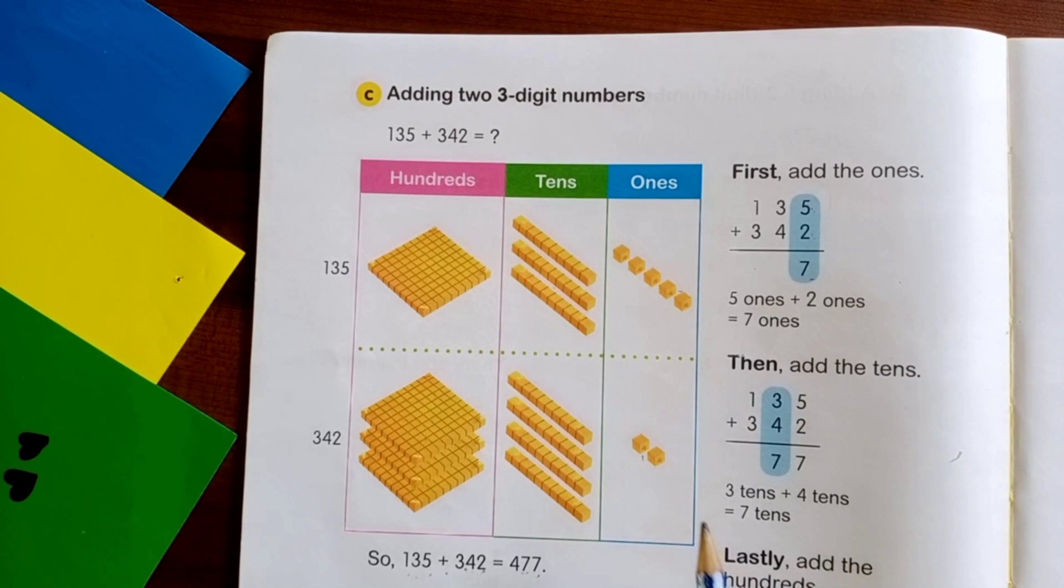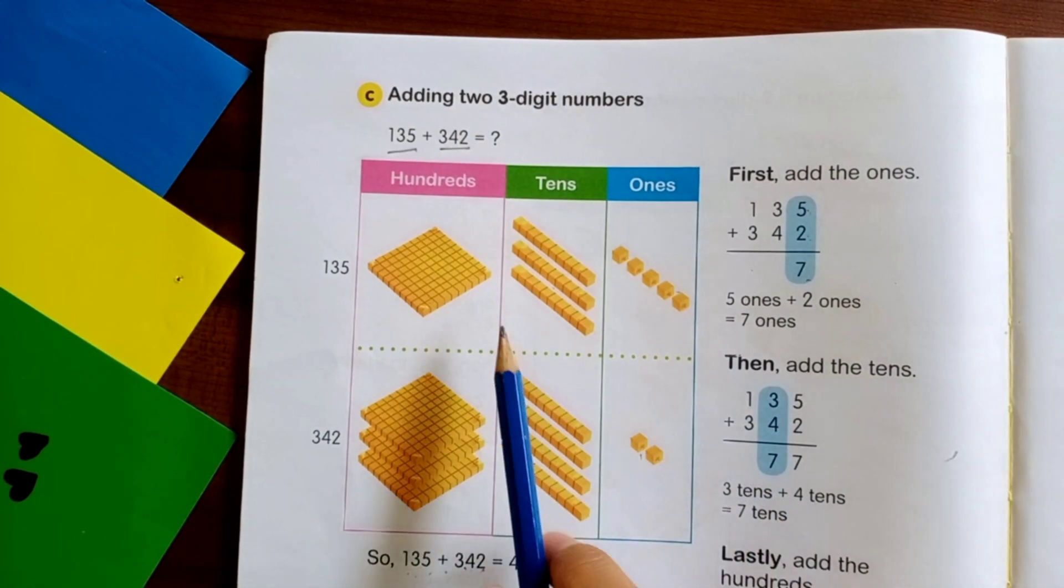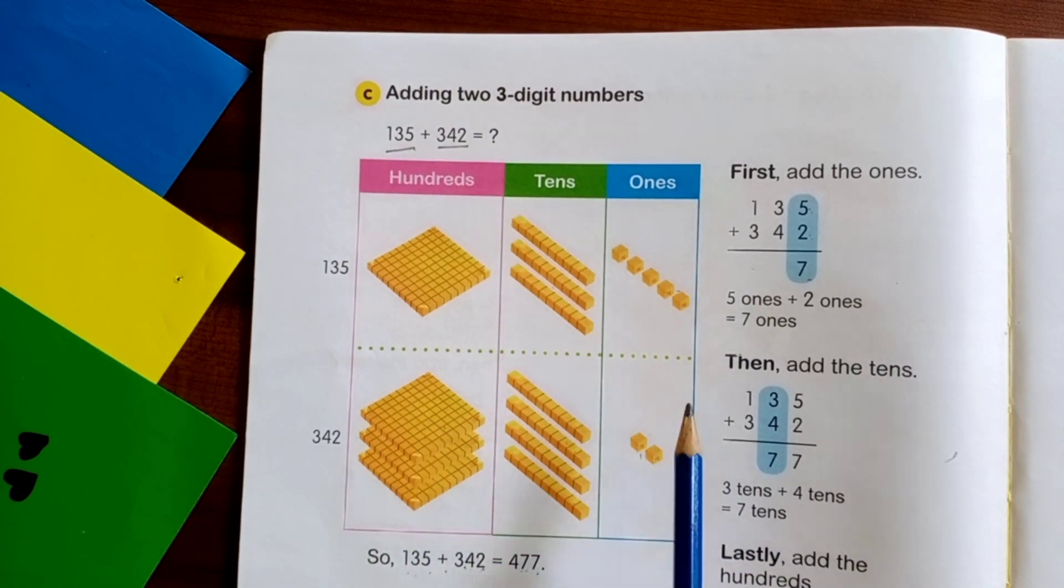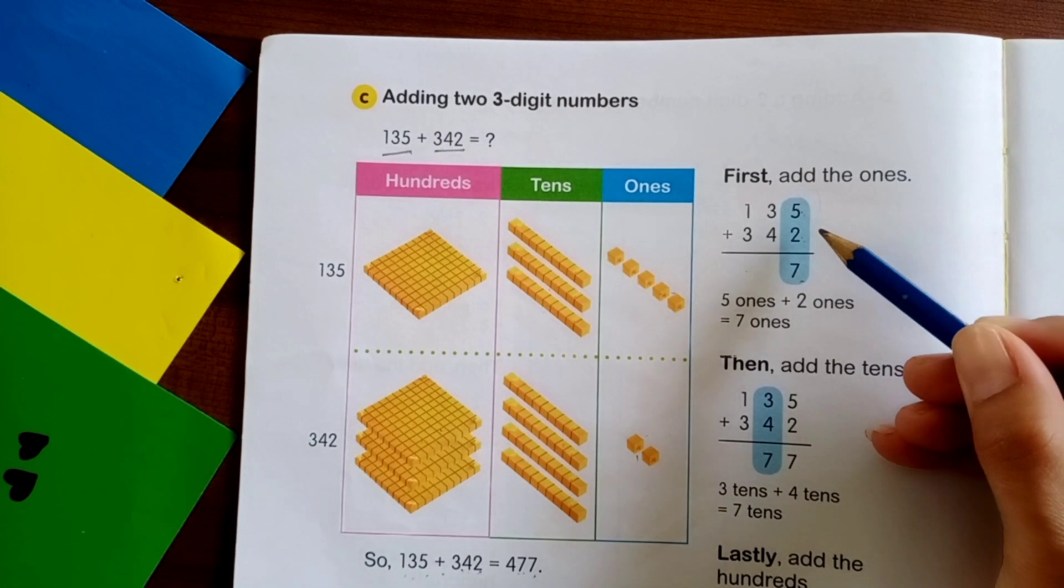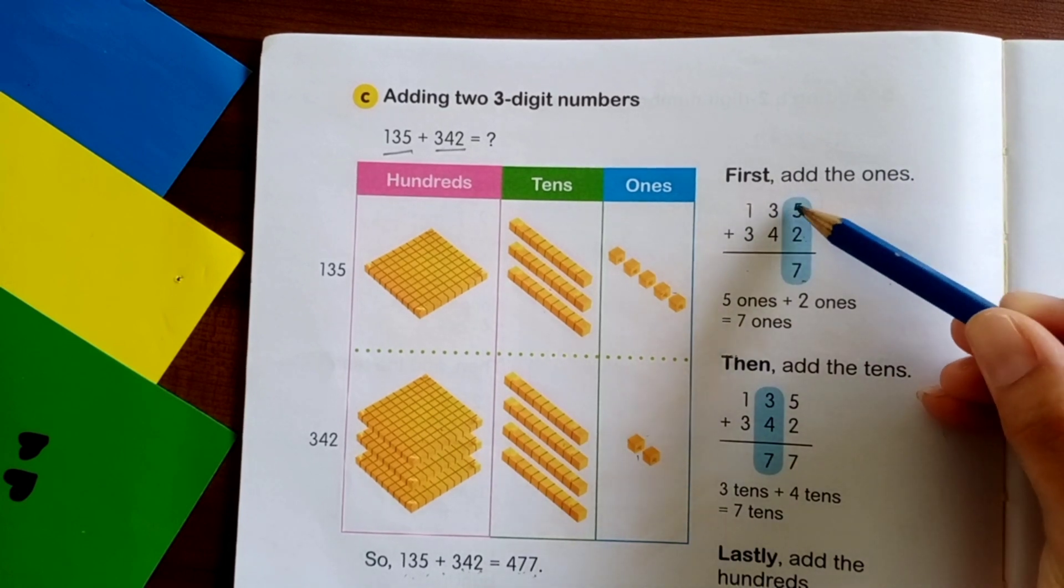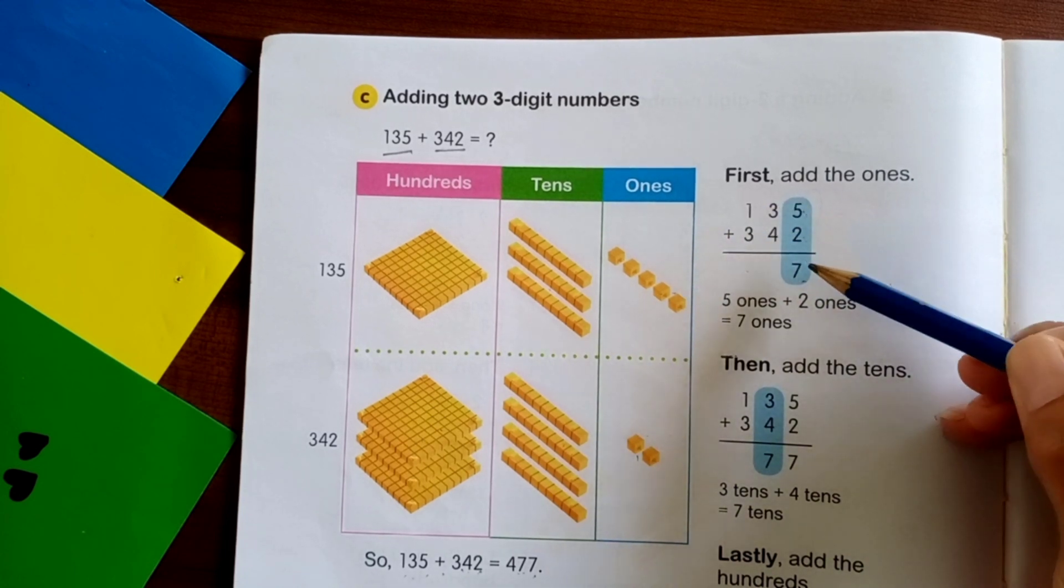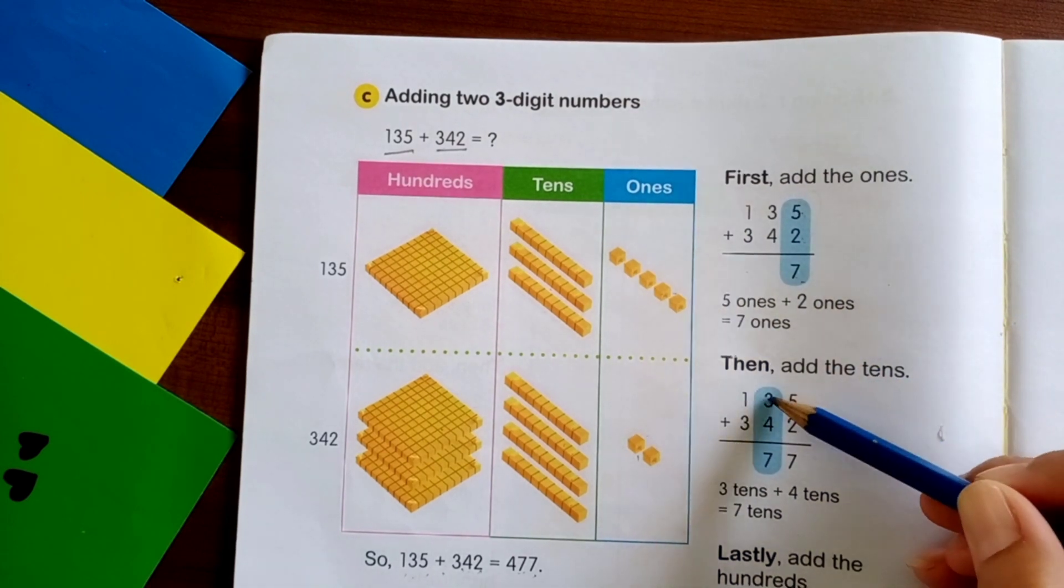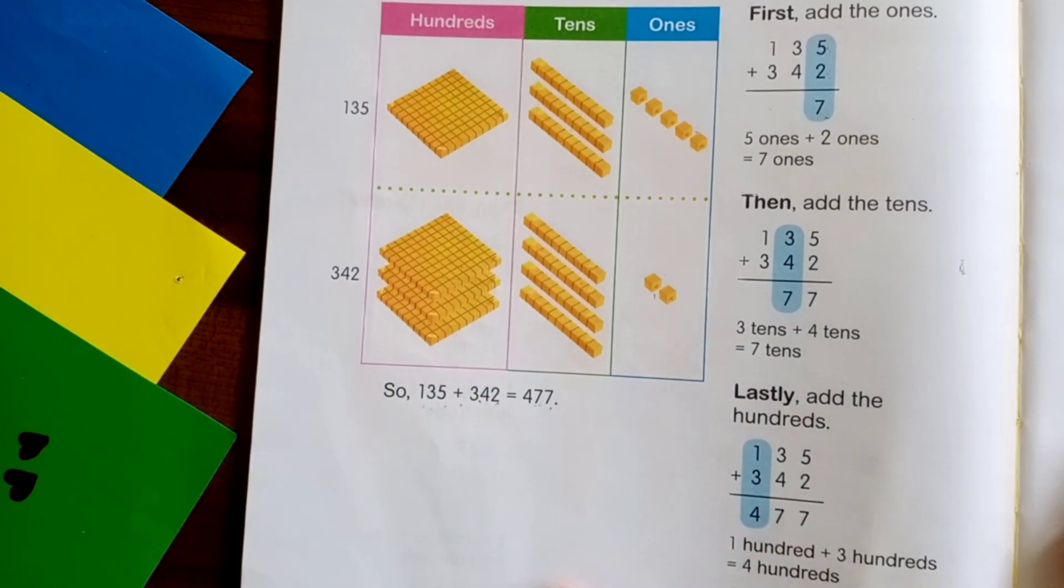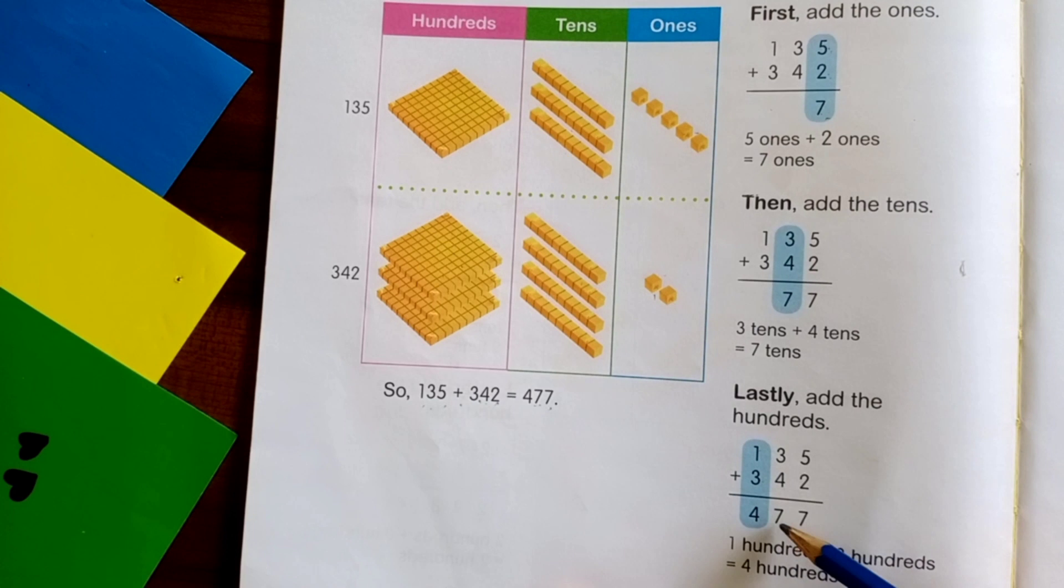The last, we add three-digit number to three-digit number. Put on place value table, 135 plus 342. Write the plus value chart like this. Now, start adding from ones. You cannot start from hundreds. That is wrong. 5 plus 2 is equal to 7. Next, 3 plus 4 is equal to 7. And the last, 1 plus 3 is equal to 4. So the answer is 477.